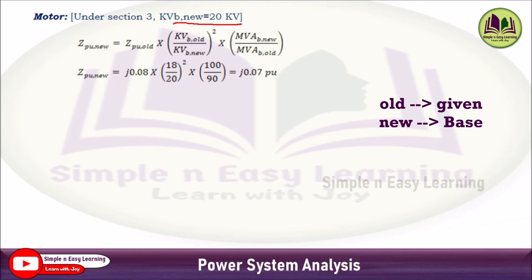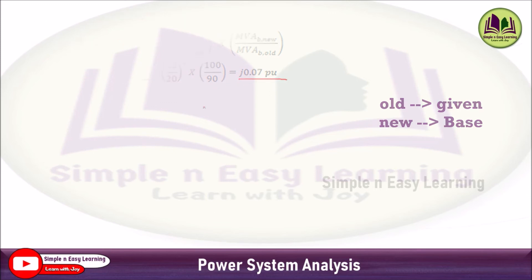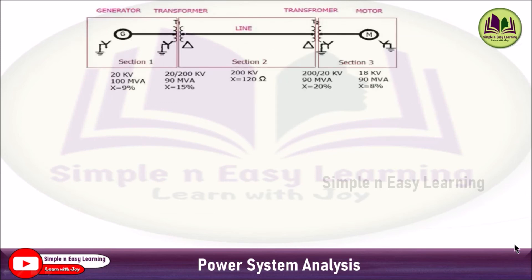For the motor in Section 3, the base KV is 20 kV. The given impedance is 8% = j0.08, given KV is 18, base KV is 20, base MVA is 100, and given MVA is 90. Substituting: j0.08 × (18/20)² × (100/90) = j0.07 per unit.